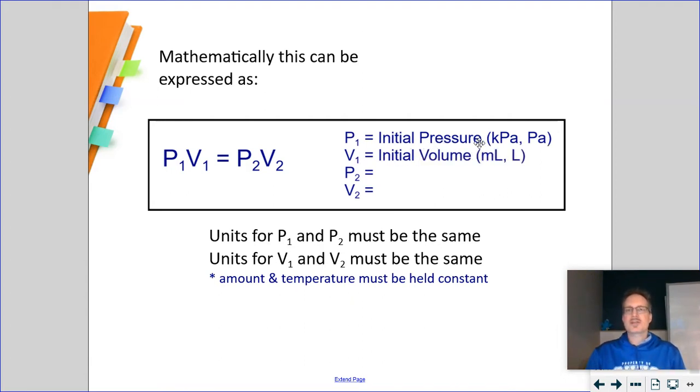And again, I want to point out, pressure is measured in kilopascals. Pressure is measured in pascals. Pressure could be in atmospheres. Pressures could be in millimeters of mercury. Volume is in milliliters or liters. Pressure, P2 will be final pressure. Pressure, V2 will be final volume. The trick to this formula is we do not care what the pressure is measured in as long as P1 and P2 is in the same unit. So, if P1 is in kilopascals, P2 has to be in kilopascals. If P1 is in atmospheres, P2 has to be in atmospheres. And that goes along the same for volume. Whatever V1 is for a unit, V2 has to be the same unit. So, milliliters, milliliters, liters, liters.